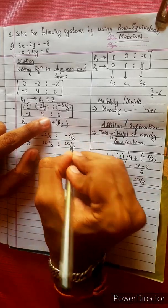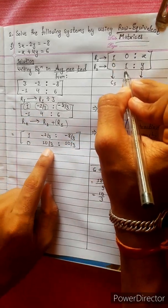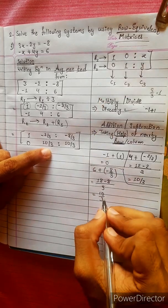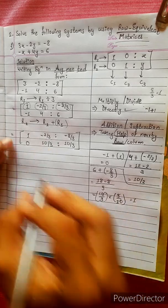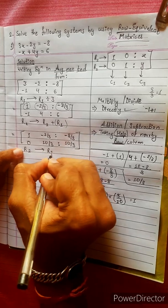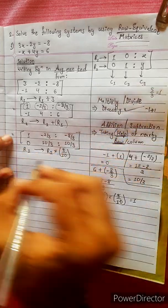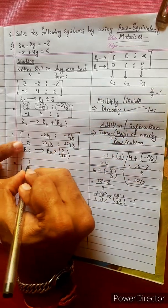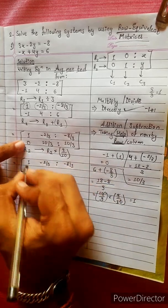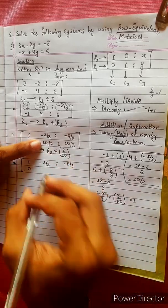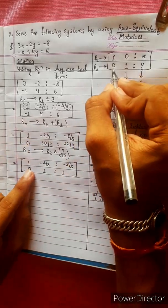10 by 3, so the result equals 0. Then R2 is multiplied by 3 by 10. R2 changes into R2 multiplied by 3 by 10 — directly equals 1, minus 2 by 3, minus 8 by 3. Zero into something gives 0; 10 by 3 into 3 by 10 equals 1.